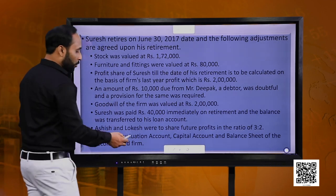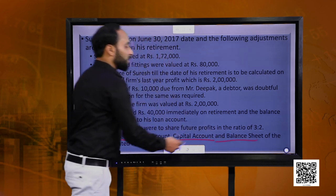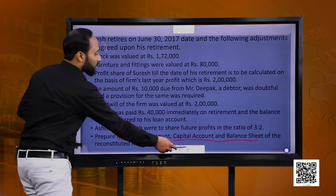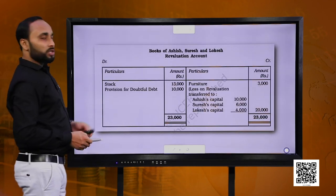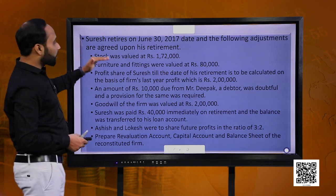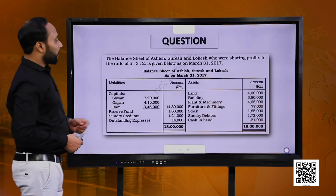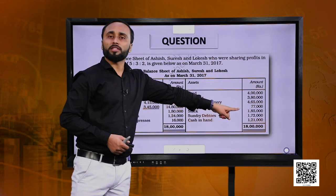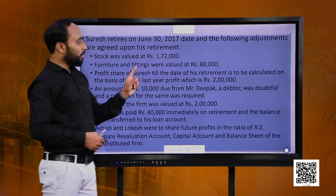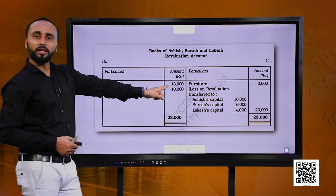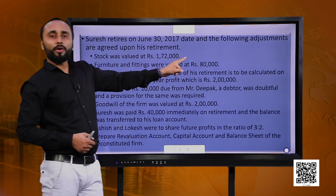You are required to prepare a revaluation account, capital account and the balance sheet of the firm. Let us prepare the revaluation account first. For the revaluation account, we look at the adjustments and see where assets or liabilities increased or decreased. Stock has to be valued at 1,72,000; earlier stock was 1,85,000, so its value is getting reduced by 13,000. We show this on the debit side of the revaluation account.